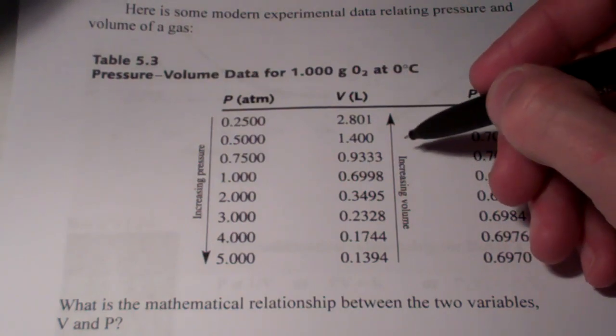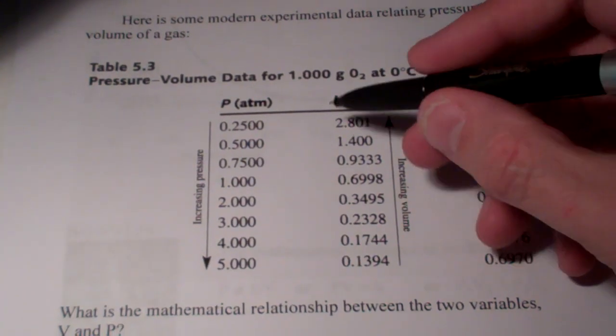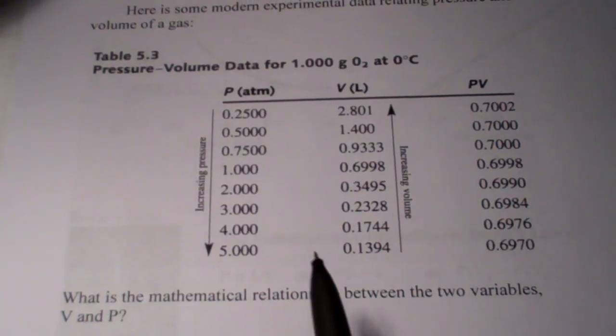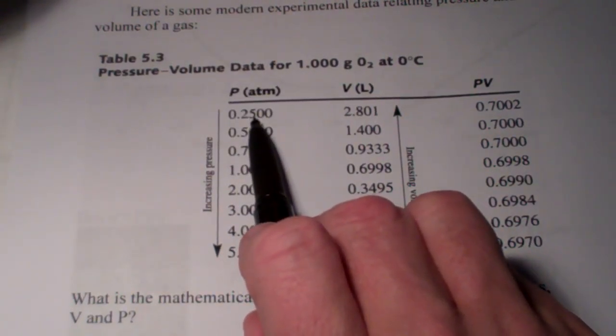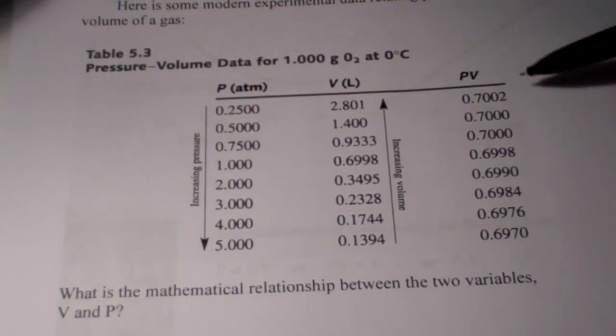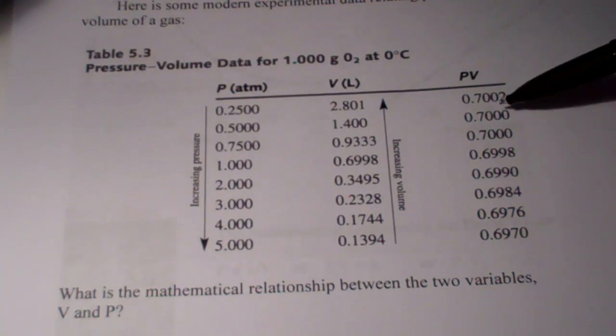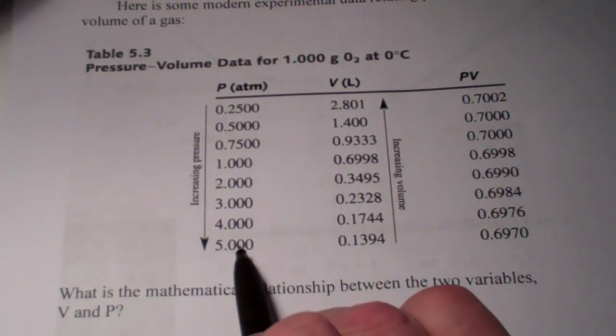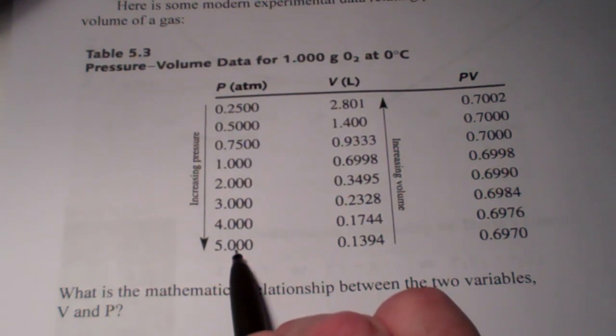We continue that process and we see similar occurrences until the pressure gets very high. In fact, we can prove that by multiplying pressure and volume together. And we notice that the product of pressure and volume comes out, well, the two significant figures to be pretty constant. In fact, even at pretty high pressures.